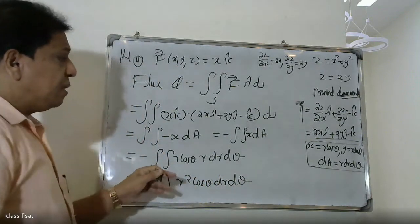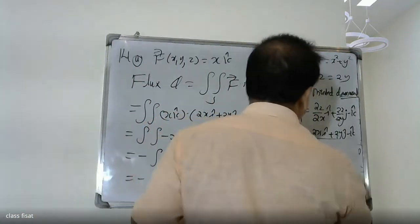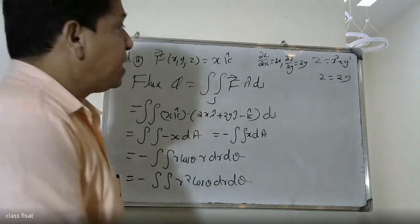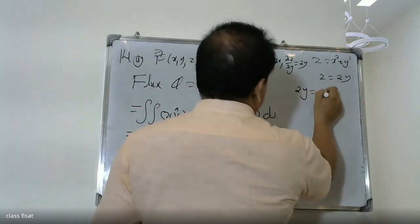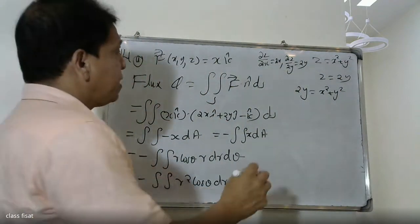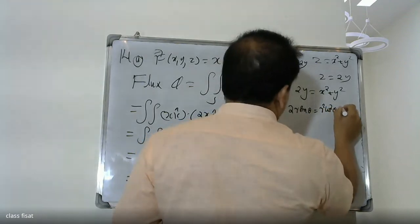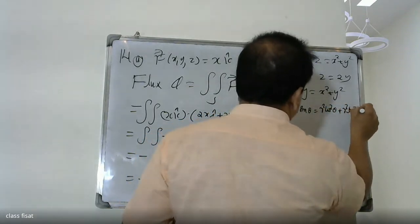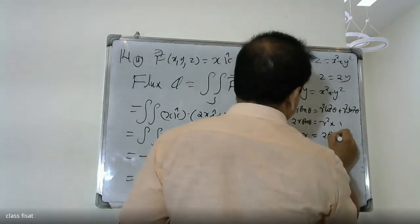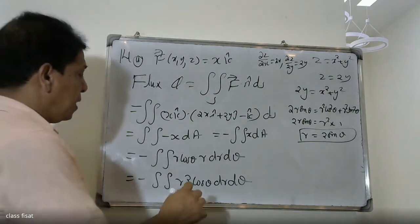Now we convert to polar coordinates: x = r·cosθ, y = r·sinθ. The R limit comes from the intersection 2y = x² + y², which gives 2r·sinθ = r², so R = 2·sinθ.